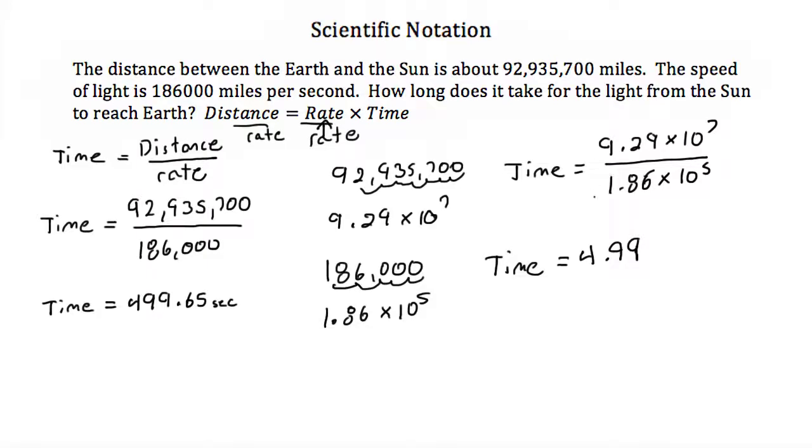These two numbers are in scientific notation, which means my answer is going to end up in scientific notation. So 9.29 divided by 1.86 is 4.99, but this is times 10. And now we just need to find the power.